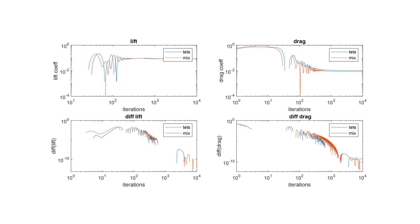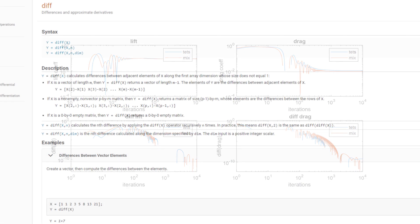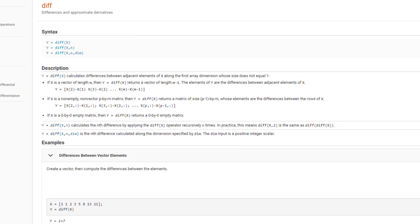Plotted here is the history of CFD runs for 0 degrees alpha. You can see that the lift and drag are plotted versus iteration. Below that, the diff, or rough derivative of the quantities, is plotted. The diff function is essentially displaying the difference between the values at the current and previous iteration.